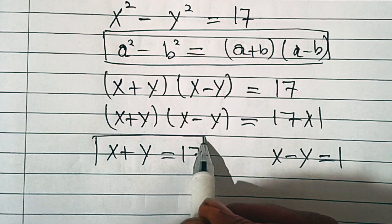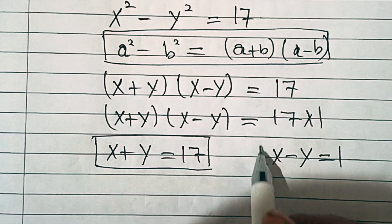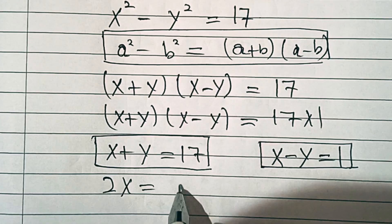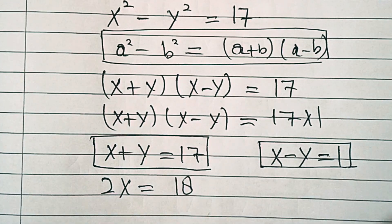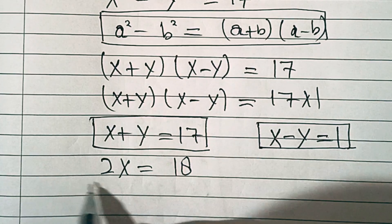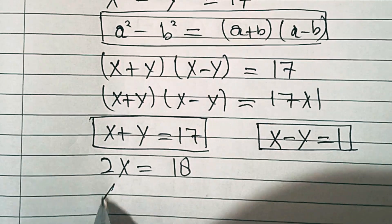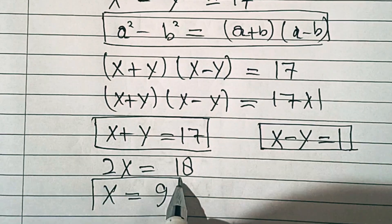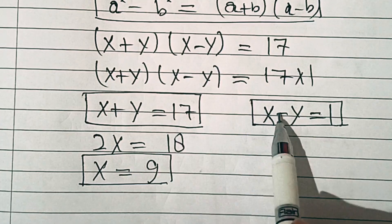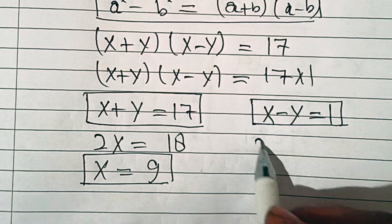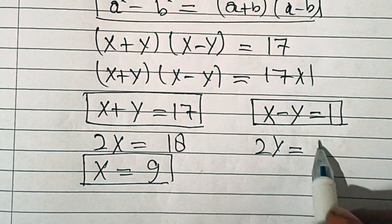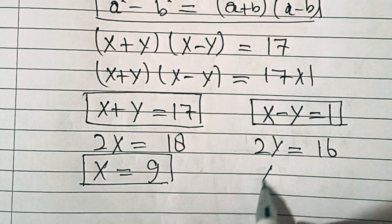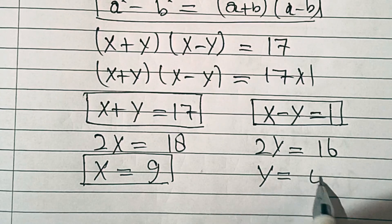Now if we add these two equations we will get 2x equal to 18, so x equals 9. And similarly if we subtract these two equations we will get 2y equals 16, then dividing both sides by 2, y is equal to 8.